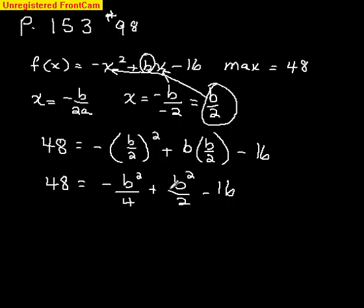So we need a common denominator, which would be 4. So I'm going to multiply the top and bottom by 2. And I'm going to add 16 to both sides and get 64 equals, and it's going to be b squared over 4 minus b squared over 4. So it's just going to be b squared over 4.